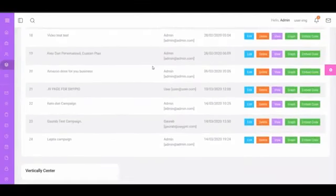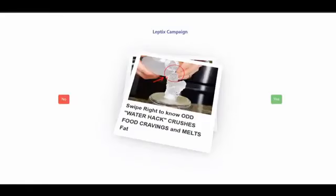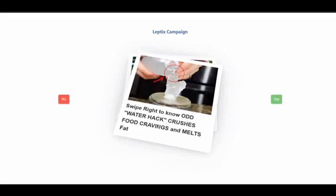Now we can see the campaign is created. You will have all the settings here. The first thing I want to show you is the View option. When you click View, you get a unique URL you can use to promote your product on Facebook or elsewhere. The minute they land here, they will see a question and one single image — the same image we used in the ad. The question reads: swipe right to know about the water hack that crushes food cravings and melts fat.